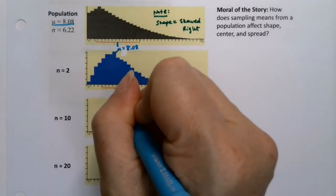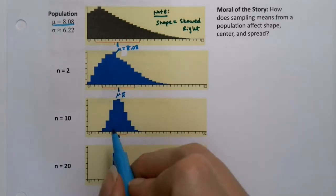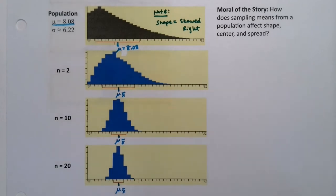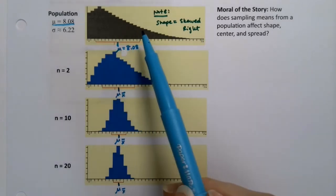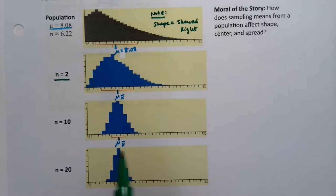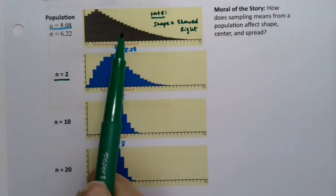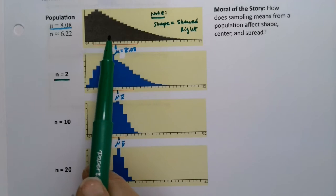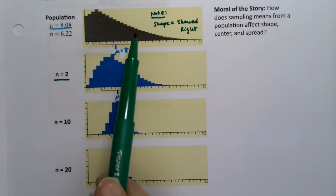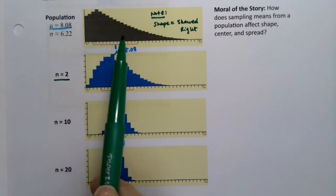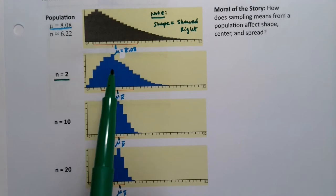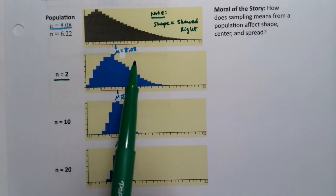This line is the mean of the X-bars — so these graphs show X-bars, not the population. Imagine you take two individuals from this population at random, find their X-bar, and plot it. Then take another two, find their X-bar and plot it. You do it over and over again, and that creates this shape. This is a graph of the X-bars when n equals 2.